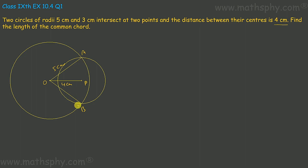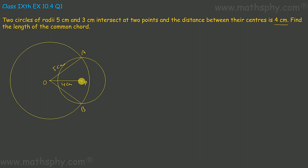If you connect A to B, you get a common chord. Now, if you construct it properly with the bigger circle having radius 5, distance from center to center being 4, and radius of the smaller circle as 3, you will find this chord AB will be going through the center of the smaller circle.